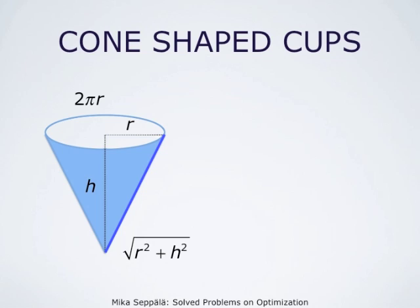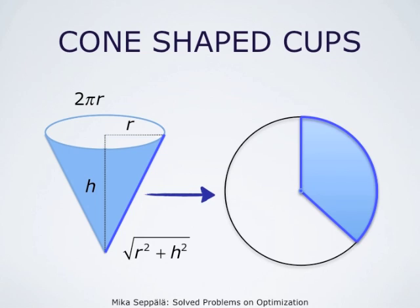We also observe that the length of the circle bounding the cone is 2 times pi times r. Next, we cut the cone open along the blue line indicated in this picture, and we observe that we do get a sector of a disc, because every point on the circle bounding the cone lies at the same distance from the vertex. This distance is square root of r squared plus h squared, so the radius of the disc obtained by cutting the cone open is square root of r squared plus h squared.